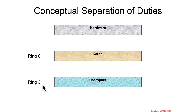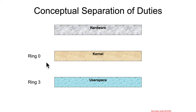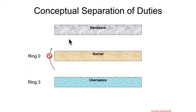Once ring 0 / ring 3 type separation comes into play, you've got the hardware, the software, and now user space. Ring 0 takes control of the system and wants to restrict things from user space. The first and most important thing it does is take control of the hardware and say to user space: you're not allowed to just talk to the hardware directly — you have to go through the kernel.